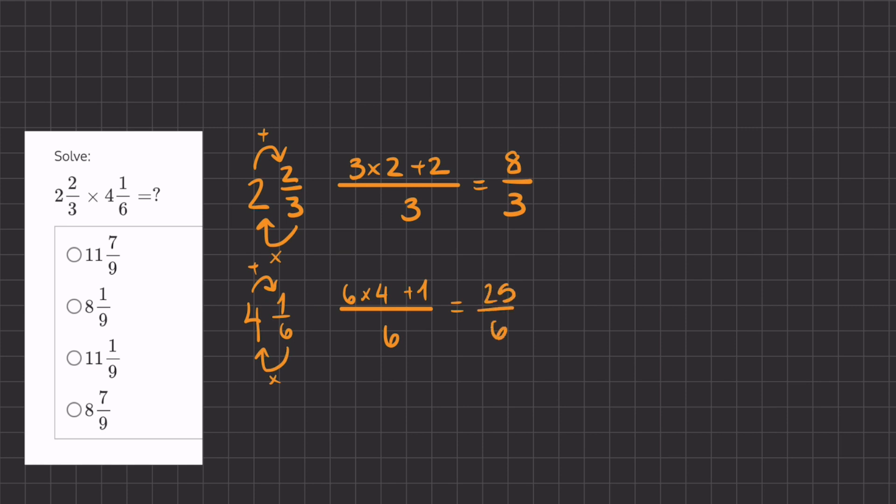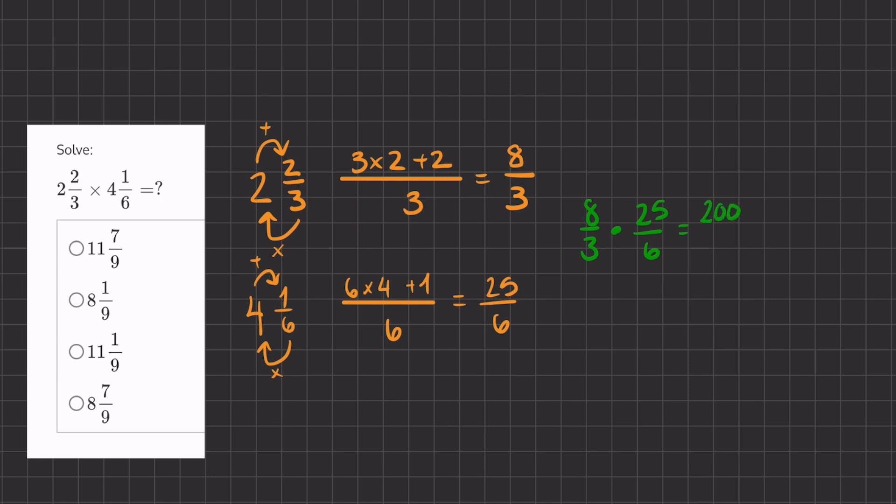Now we have an easy multiplication of two fractions: 8 over 3 times 25 over 6. 8 times 25 is 200, all over 3 times 6, which is 18.